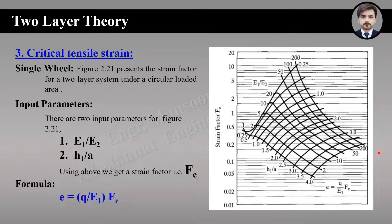Now how to use the figure: assume the modulus ratio E1 by E2 is equal to 10, so we draw a straight line. Then assume H1 by A is equal to 1.5. From the intersecting point we move straight towards the left and our required strain factor is obtained.